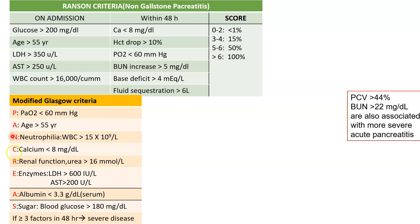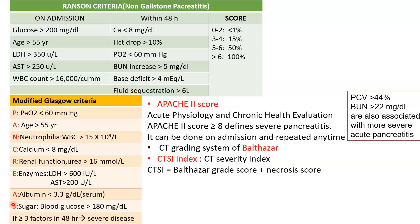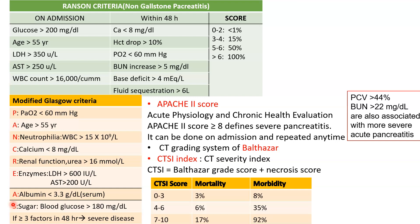There is also the modified Glasgow criteria, remembered with the mnemonic PANCREAS. If more than three factors are present within 48 hours, that is indicative of severe disease. Other criteria such as the APACHE 2 score and the CTSI index are also useful, and the CT severity index is typically reported when a contrast-enhanced CT scan is performed.